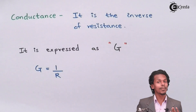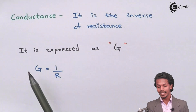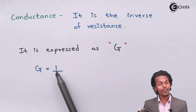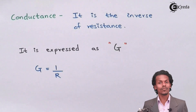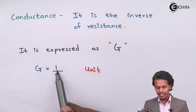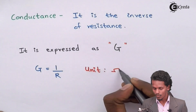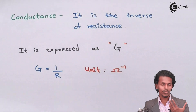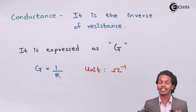Now we are going to learn about conductance. Conductance is the inverse of resistance. It is expressed as G. Since it is the reciprocal of resistance, we get the formula G equals 1 upon R. The unit of conductance, since the unit of resistance is ohm, will be ohm inverse. This ohm inverse can also be written as siemens, which we will learn more about in the future.